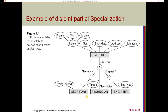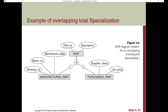A part could be both manufactured and purchased, so it could have any number of these attributes. But we also have the total constraint here — if we do have a part, it must belong to at least one of these subclasses. It must be manufactured or purchased.